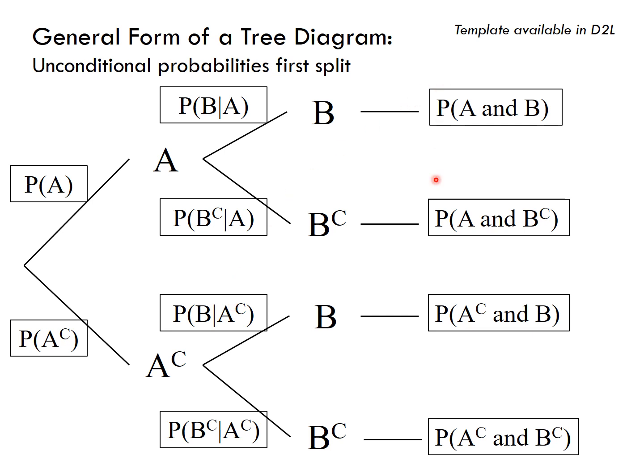The last set of branches are what we call AND probabilities, where we just multiply across our branches. So P of A times P of B given A gives us P of A and B. These four branches will match the interior cells of a table.